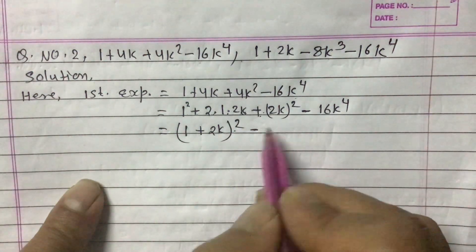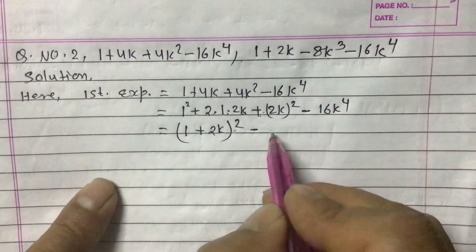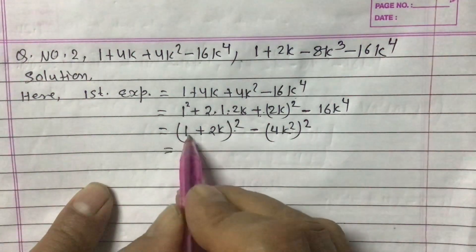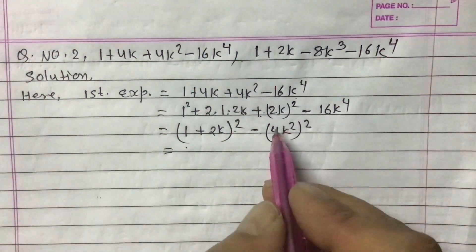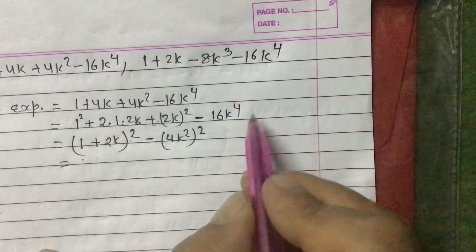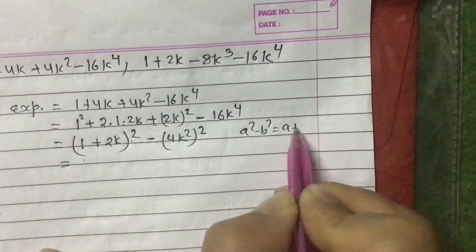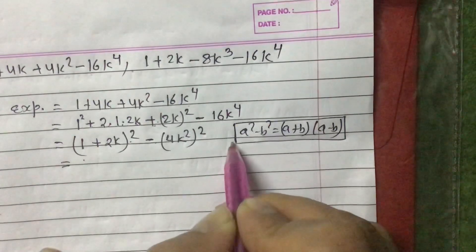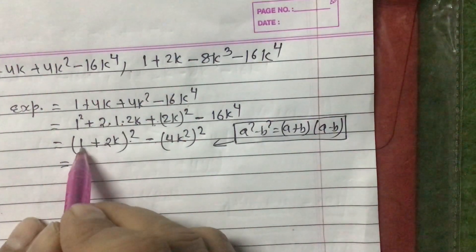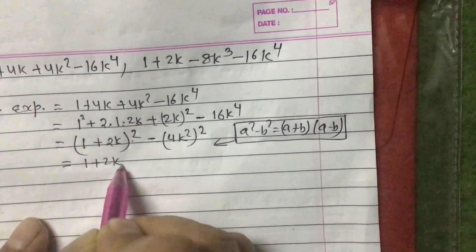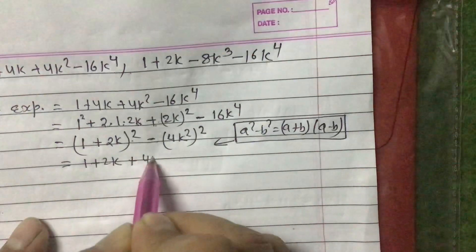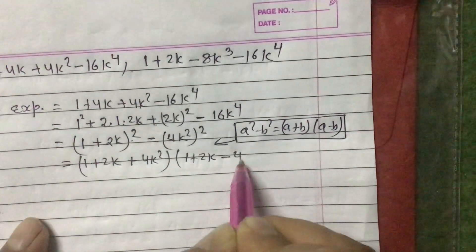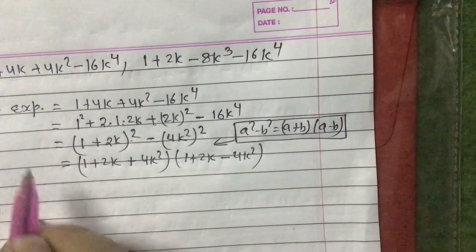Now 16k⁴ = (4k²)², so the expression becomes (1 + 2k)² - (4k²)², which is in the form a² - b². Applying the formula a² - b² = (a + b)(a - b), where a = (1 + 2k) and b = 4k², we get the two factors of the first expression: (1 + 2k + 4k²) and (1 - 2k + 4k²) — wait, (1 + 2k + 4k²)(1 + 2k - 4k²).